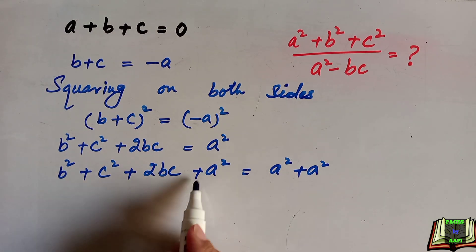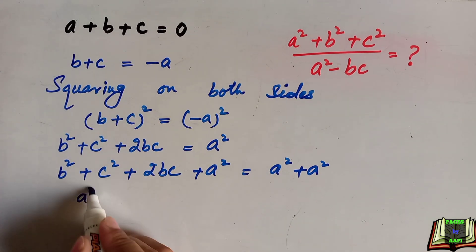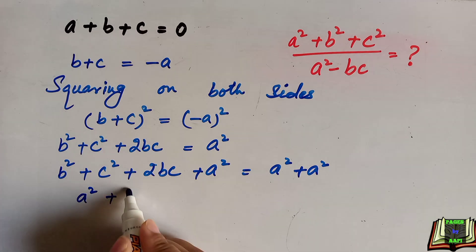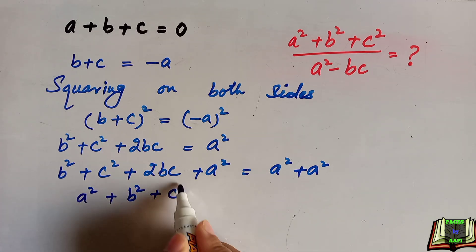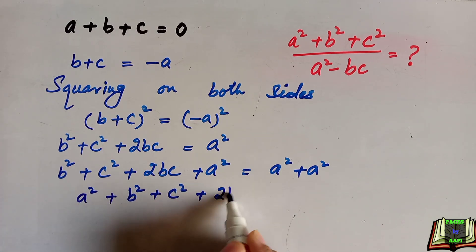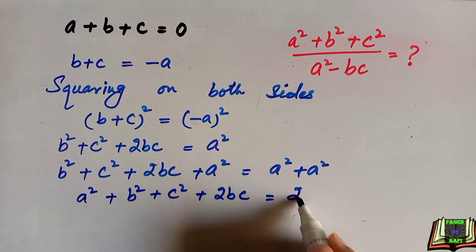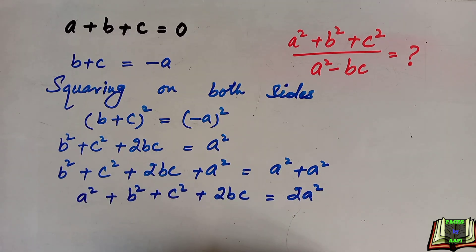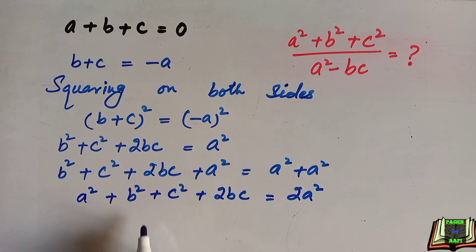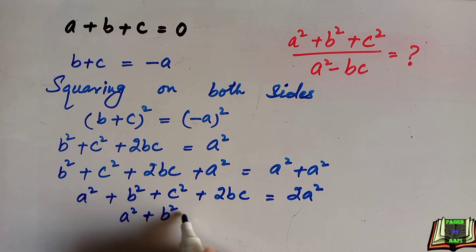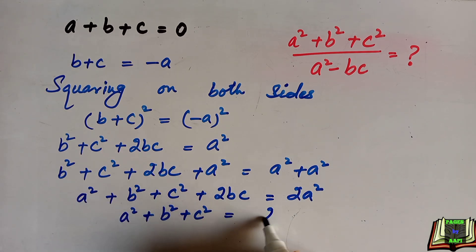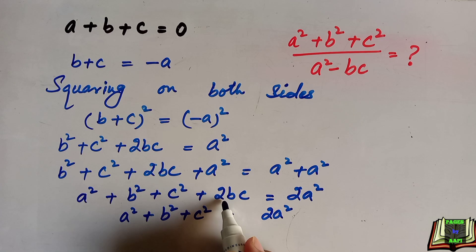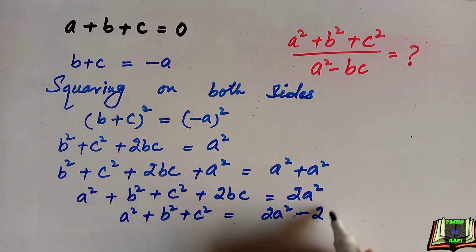On the left hand side we arrange the values as: a² plus b² plus c² plus 2bc, and on the right hand side a² plus a² which equals 2a². We are going to keep a² plus b² plus c² as it is, and move 2bc to the right hand side.